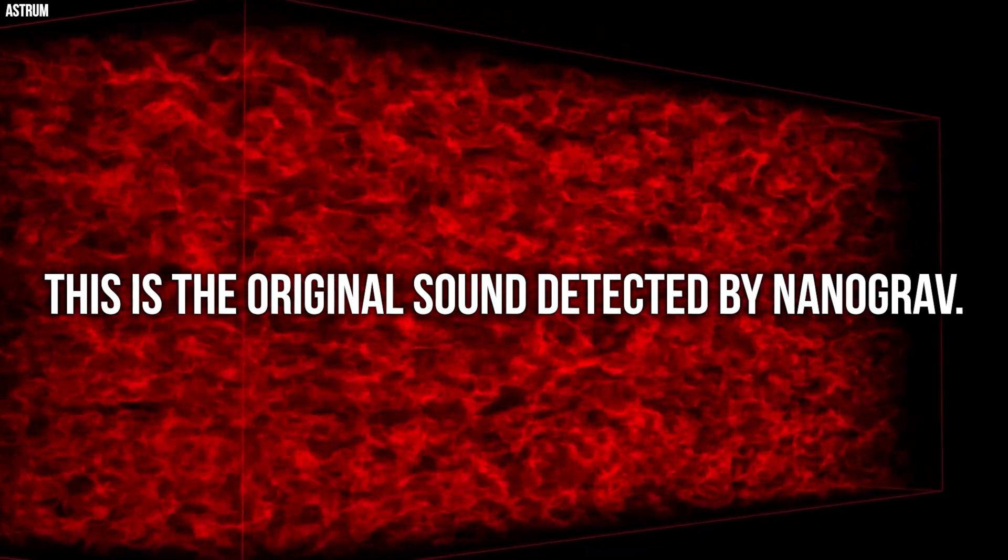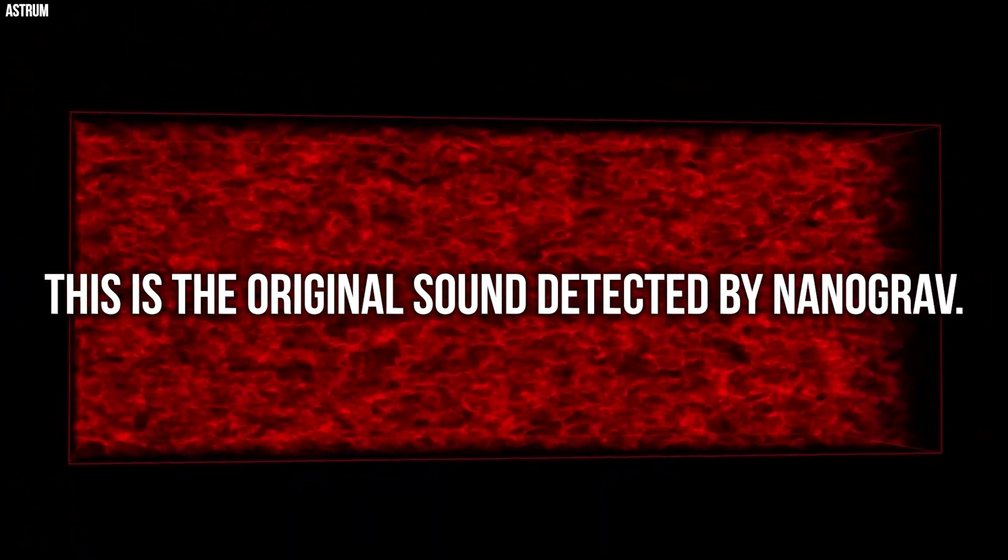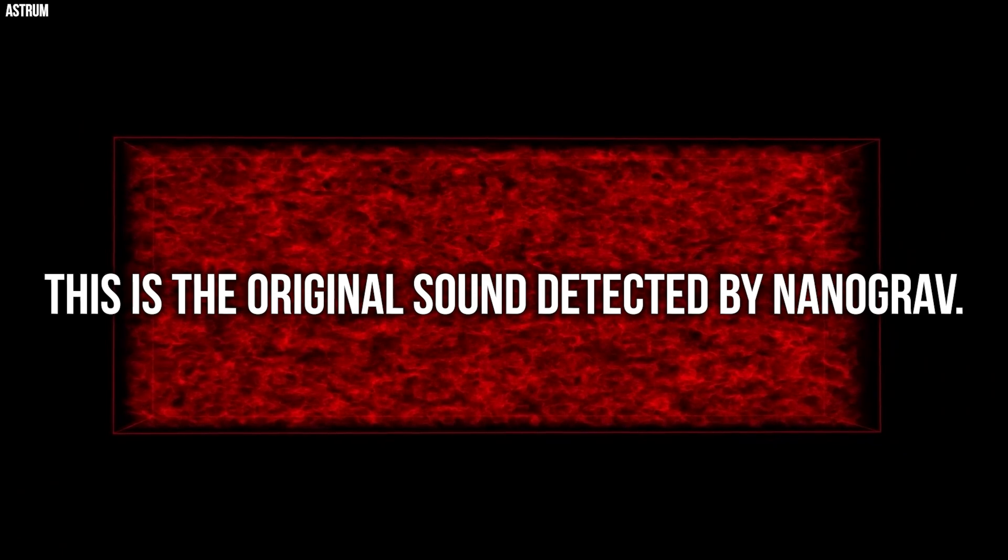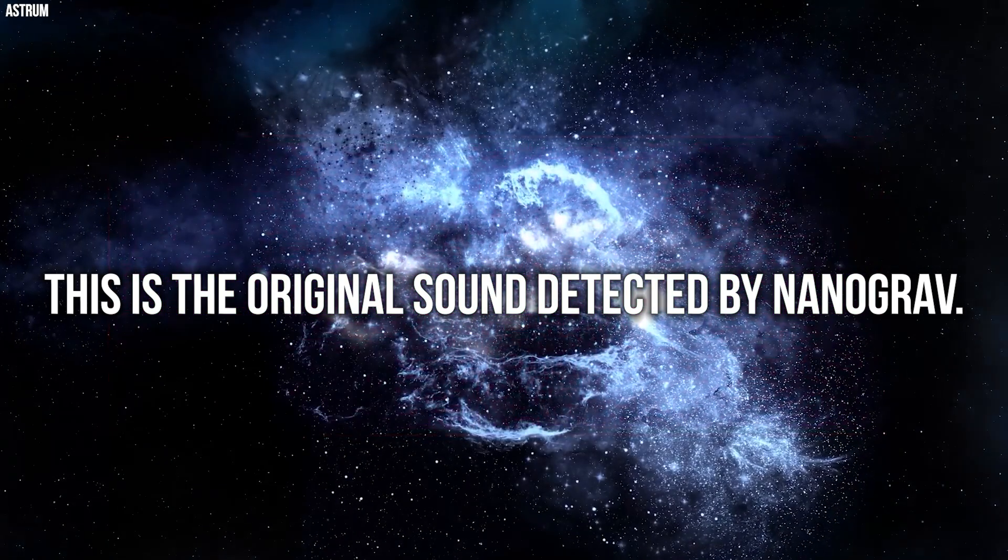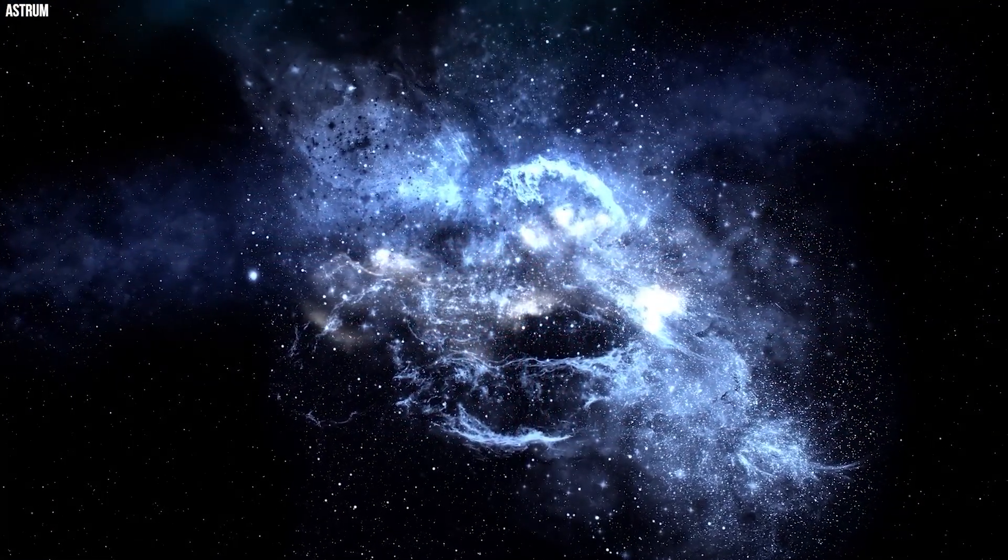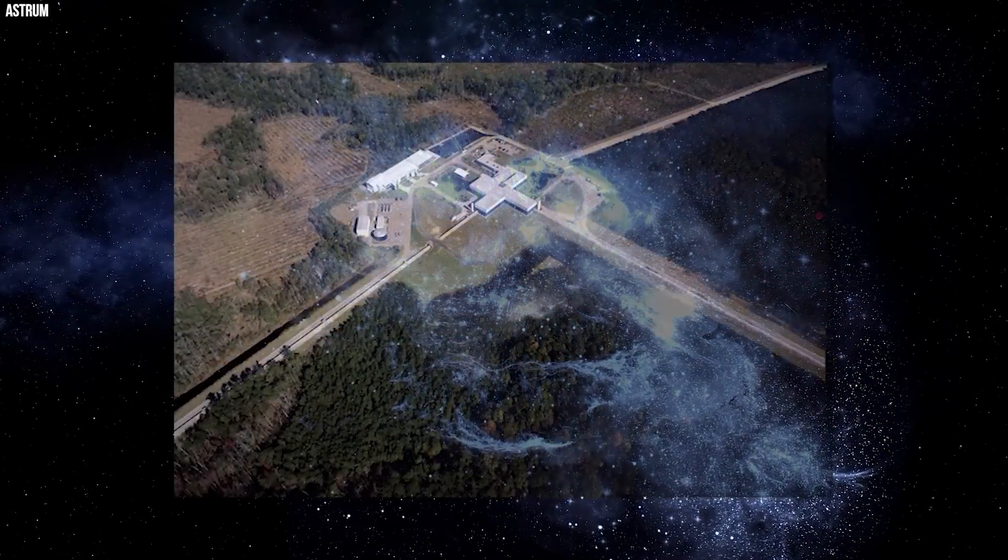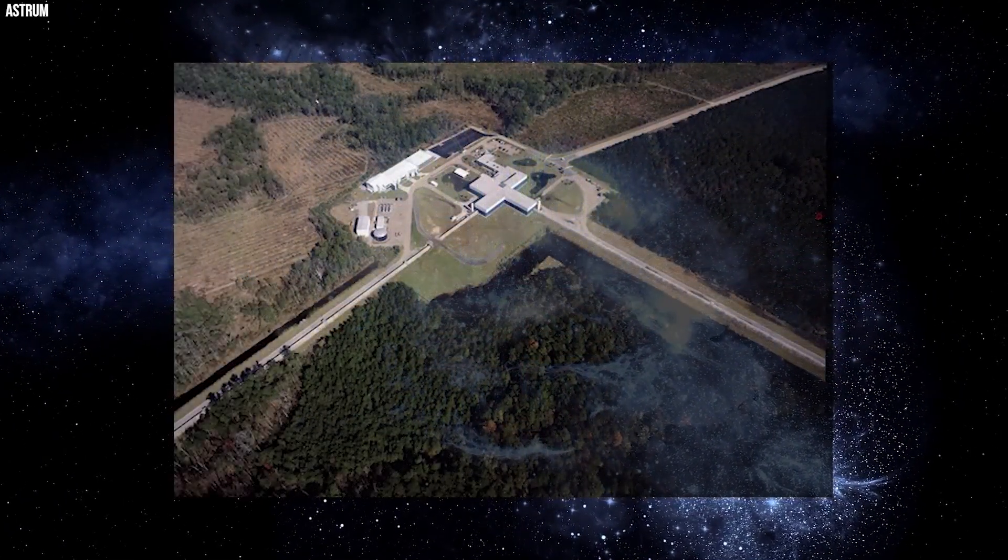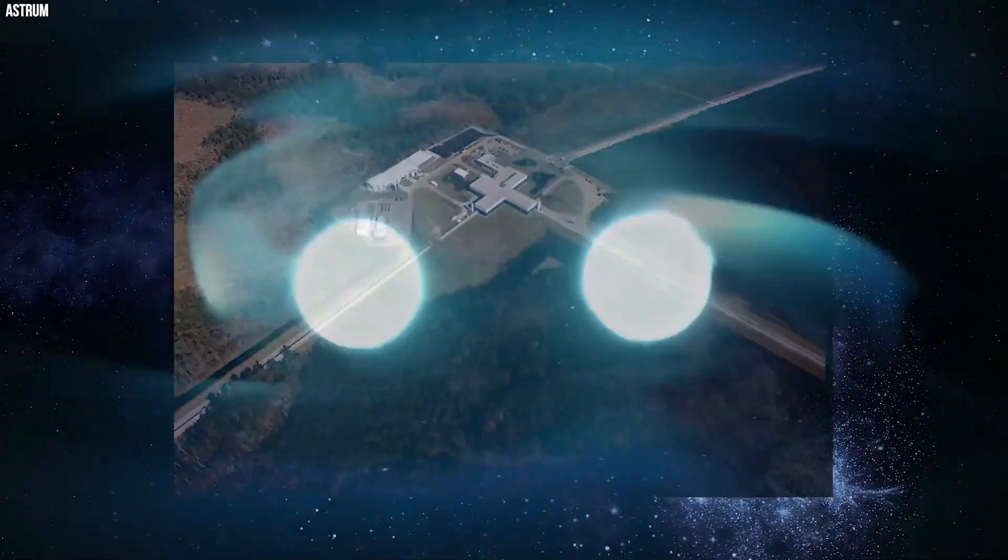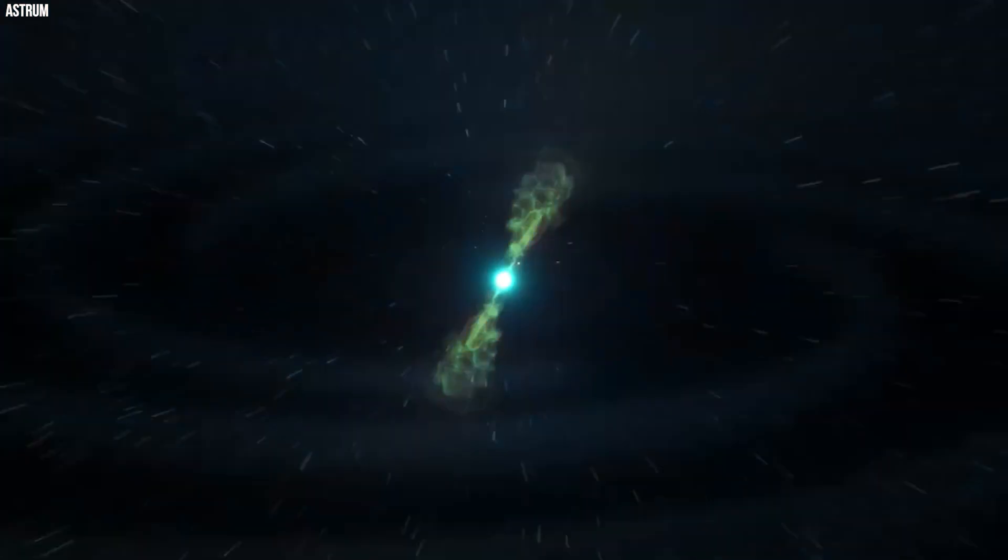It's interesting to know why NanoGrav can do what LIGO and LISA can't. Just as various telescopes are needed to observe different light frequencies in the electromagnetic spectrum, distinct gravitational wave detectors are required to hear diverse frequencies in this gravity-based radiation spectrum.